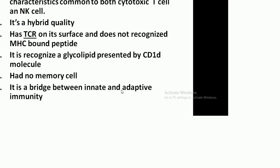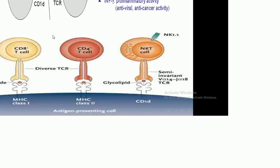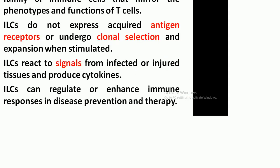NKT cells are a third type of cells with characteristics common to both cytotoxic T cells and NK cells — a hybrid cell. They have T cell receptors, recognize glycolipids presented by CD1 molecules, and have no memory cells since they function in innate immunity. Innate lymphoid cells (ILCs), also known as helper ILCs, mirror the lymphocyte types and functions of T cells. They do not express or require antigen-specific receptors or undergo clonal expansion, remaining available in native tissues, responding to signals from infected cells and producing cytokines.